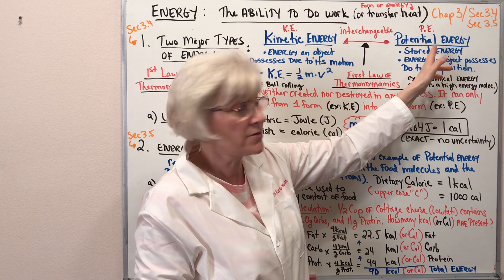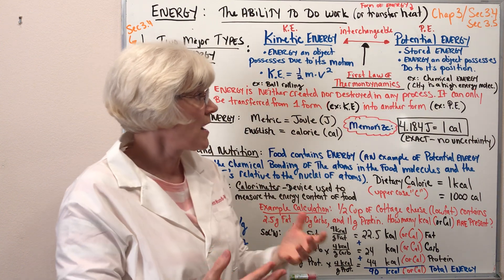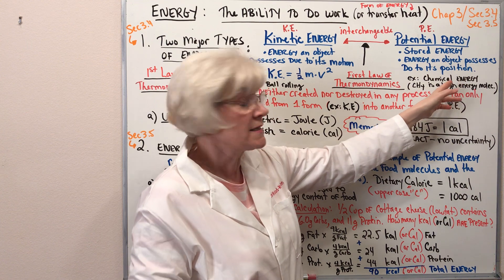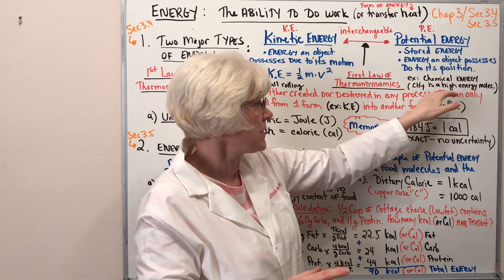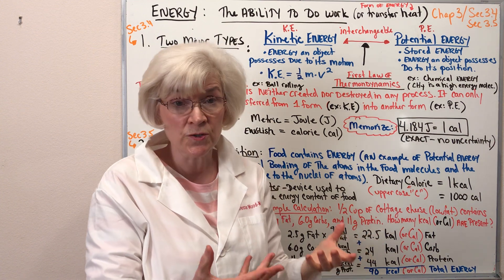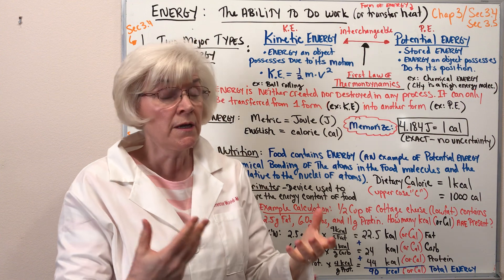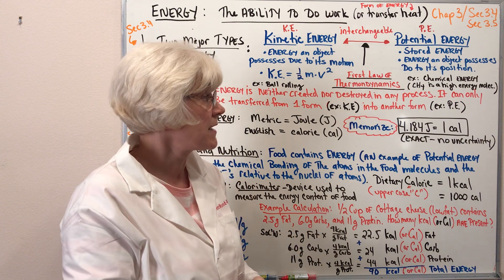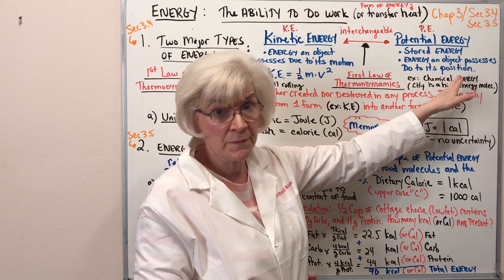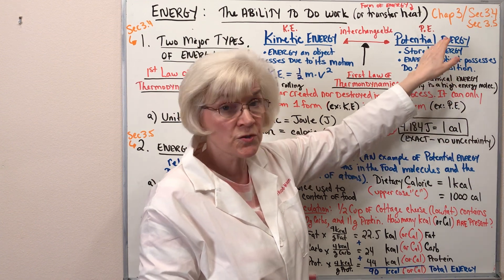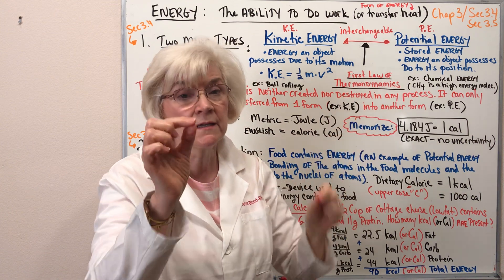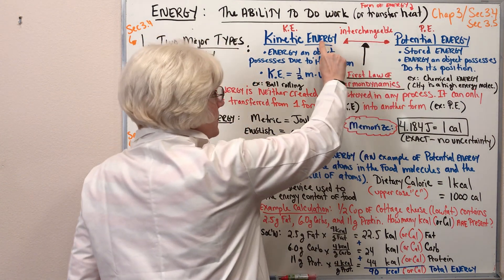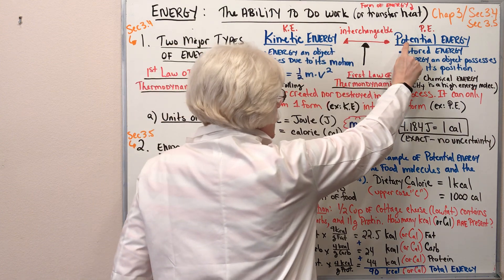The other type of energy is potential energy, considered to be stored energy — energy an object possesses due to its position. Chemical energy is a type of potential energy. For example, methane (natural gas) is a high-energy molecule; we can burn it in a Bunsen burner in the laboratory and see that energy is released in that process. So chemical energy is a form of stored, potential energy. There's an arrow shown here connecting potential energy and kinetic energy.